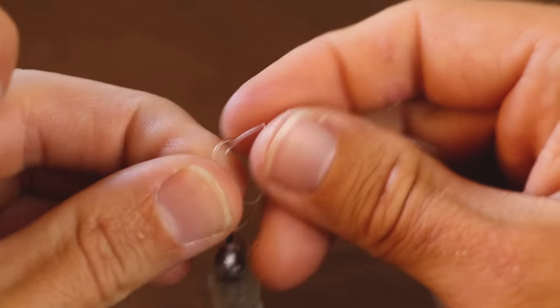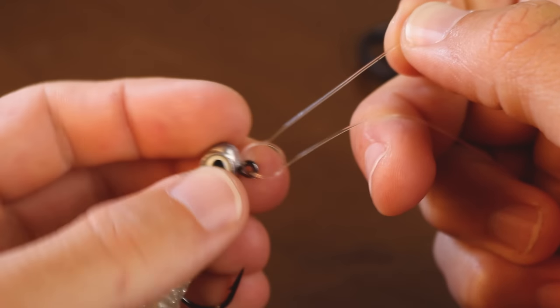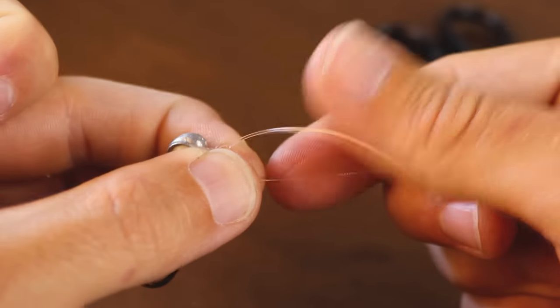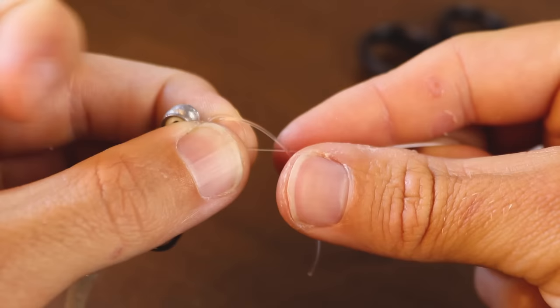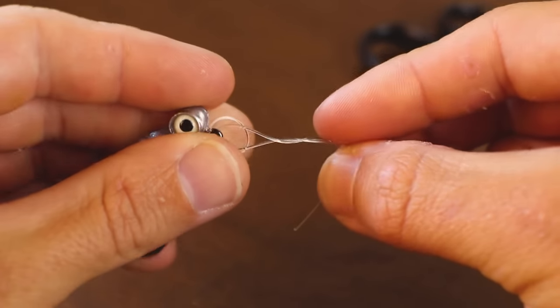So going through here, we're going to pull that through and get that little loop a little bit tighter there. And then we're going to run this tag end around the main line two to three times. I prefer two because it's just quicker, ends up with a cleaner knot. So you get two wraps there.